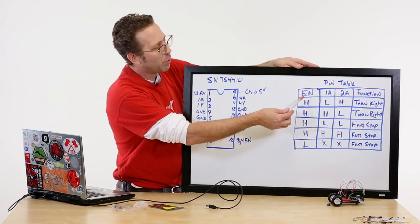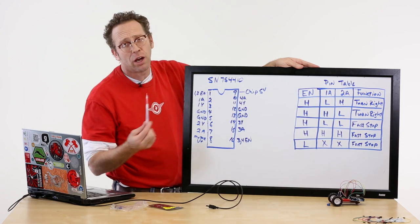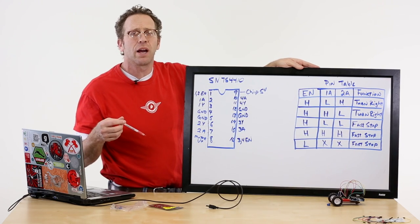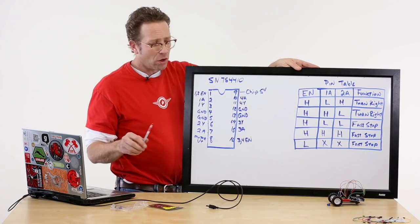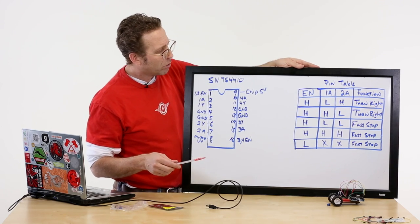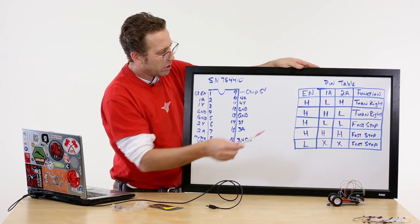We talked earlier about the enable pins on these, and what I've done is I've tied all the enable pins to 5 volts, the chip voltage, which ties them high, which means everything will operate. That's cool. Well, the next thing I can do is pulse these pins.